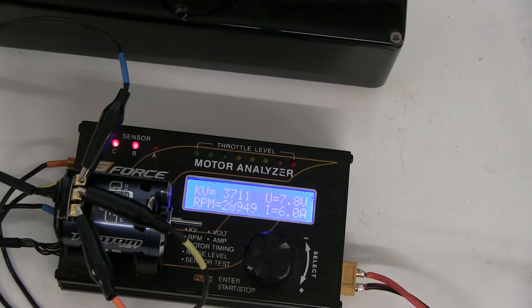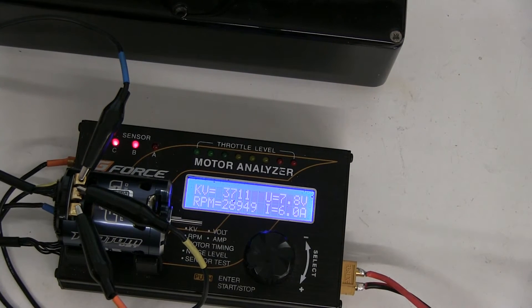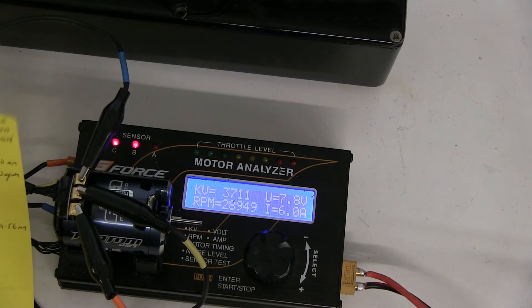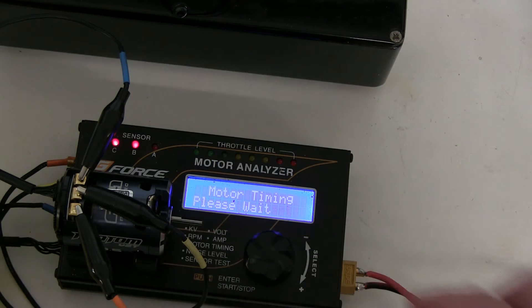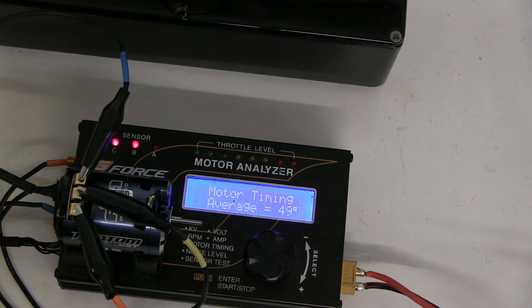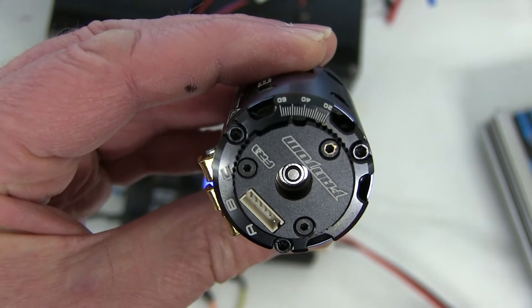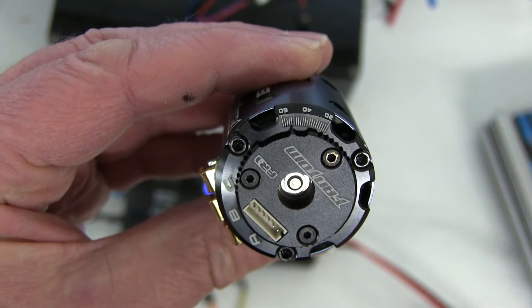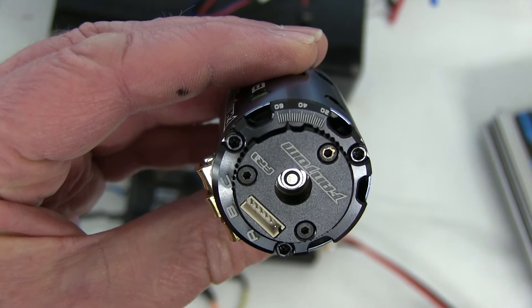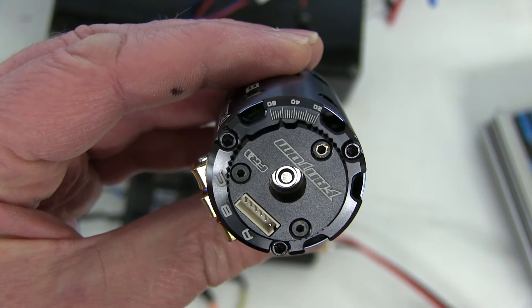The v2 torque 13.5, it's got the 3711 KV at 6.0 amps. And the timing is 49 degrees with a spread of 49, 49, 48. And on the M bell the timing again is just a fraction over 50 degrees on the graduations.